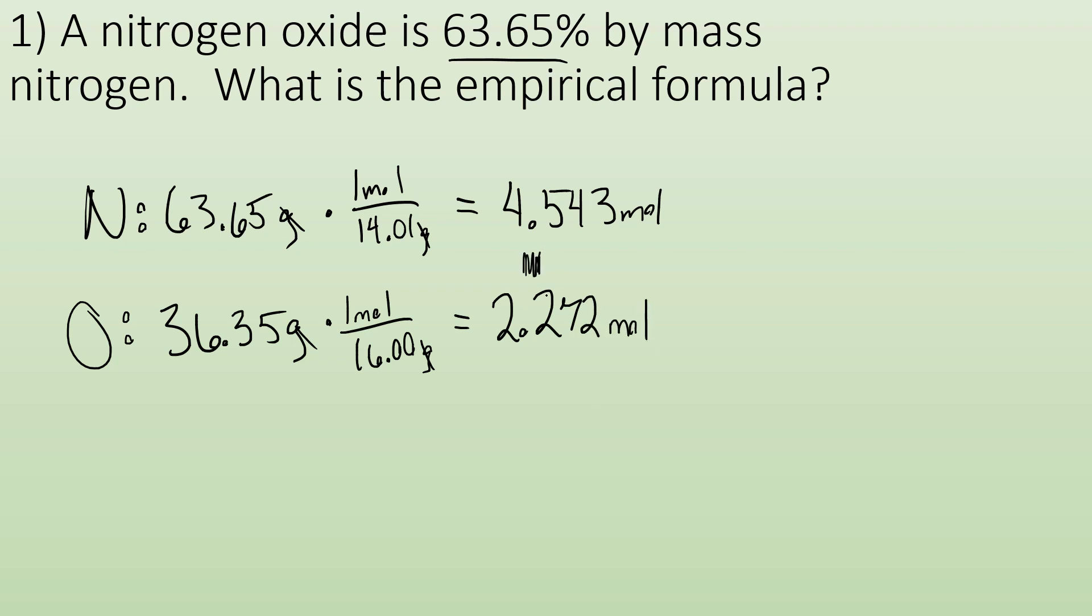So now I have a ratio between the two, but it's not in the form of an empirical formula, right? We're looking for the most simplified numbers. I can't put like N subscript 4.543, O subscript 2.272. That doesn't make it, no, we're not doing that. So how are we going to simplify them? Well, you look for the smallest number of moles, which in this case is 2.272, and you divide all of the rest of them by that number.